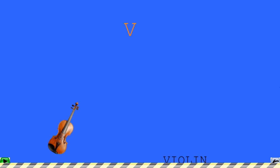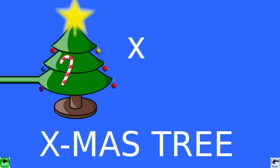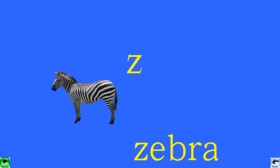S for sun, T for thunder, U for u-turn, V for violin, W for watermelon, X for x mystery, Y for yacht.